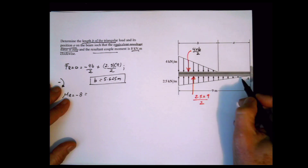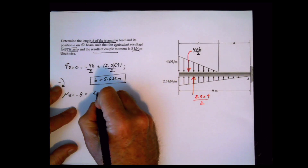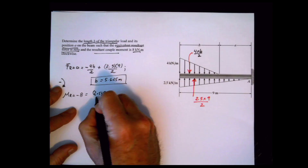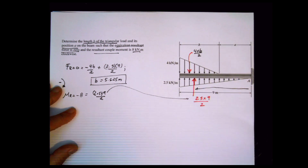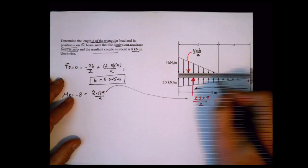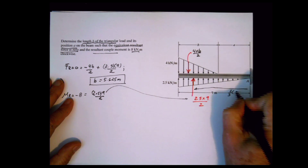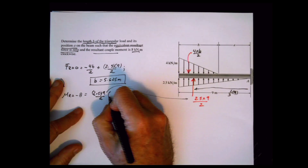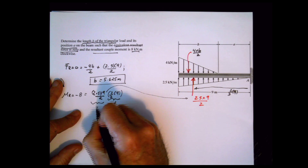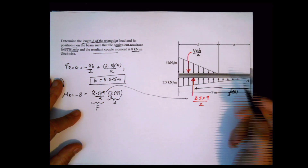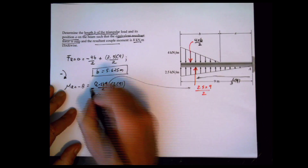The moment from the first force is 2.5 times 9 divided by 2, multiplied by its distance from point a. Because we are measuring from the acute angle, the location of the equivalent concentrated force is 2/3 of the base, and the base is 9, so it's times 2/3 of 9. If I apply that force, the rotation will be clockwise, which is negative, so I put a negative here.